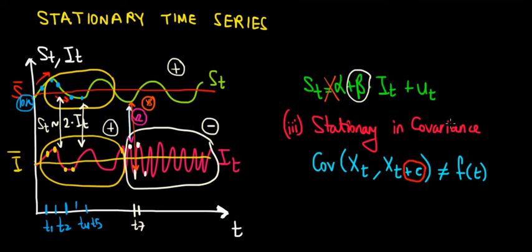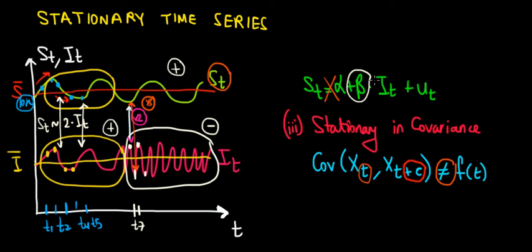That's why to have stationarity in covariance, the covariance of a variable across time — at a point in time and the next period — must not depend on time; it must be constant across time. If we have this condition satisfied for both the dependent and the independent variable, the stationarity in covariance assumption holds and the regression model for the time series can be estimated.